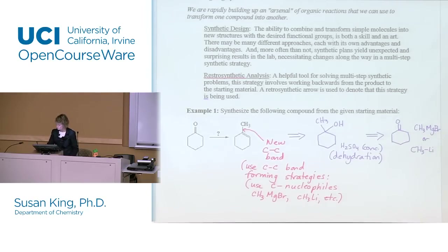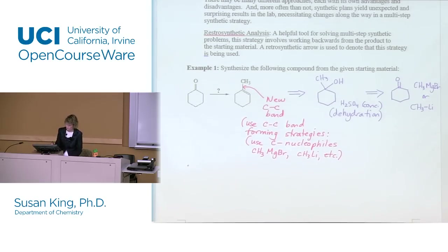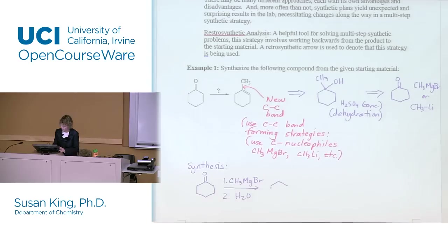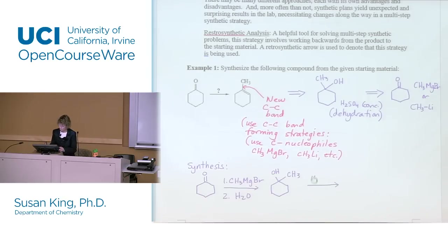Here's what the synthesis in the forward direction looks like: sometimes I'll have an open-ended synthesis where you draw products from each step; sometimes I have it in a box and you just number the steps. If it were open-ended, Grignard attacks the carbonyl, then you protonate with water, and then use concentrated H2SO4 to make our product.